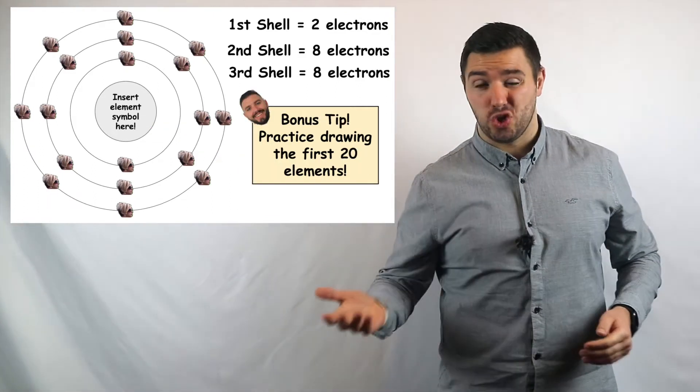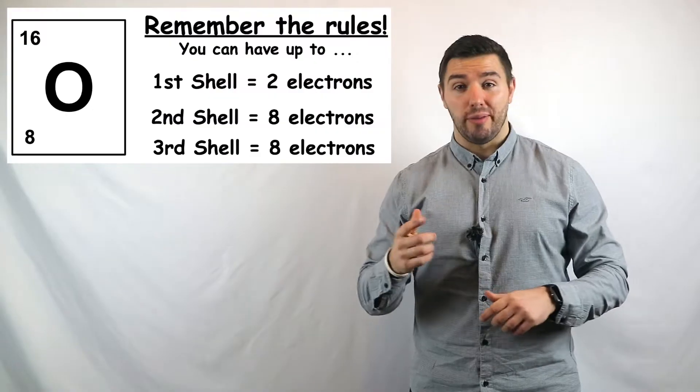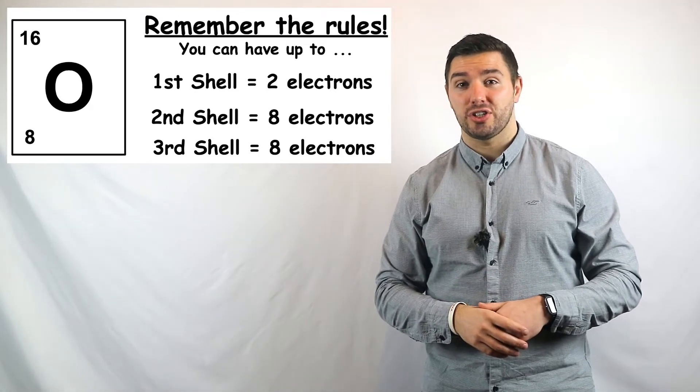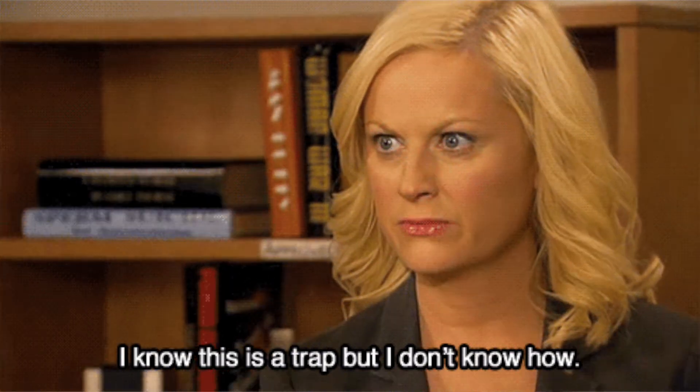Okay, enough talking from me. Let's have a go at trying to draw one of these. So here's oxygen. You'll see it's got 16 on top and 8 down below. So based on what I told you, have a go at drawing it. Remember, you can only put two electrons in the first shell, and then you can fill up to eight in the second. And if needs be, you can fill up to eight in the third. I'll just wait here, I guess.